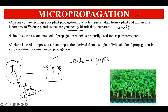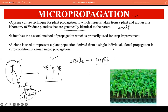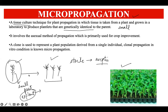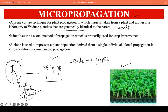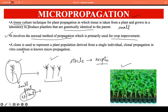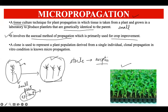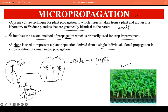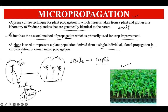In other words, micropropagation is a technique to propagate plants under sterile conditions that is responsible for the production of a large number of genetically identical plants from a single source. This technique is profoundly used in the fields of agriculture, horticulture, and many more. It involves an asexual method of propagation and is primarily used for crop improvement. All the plants propagated from the parent plant are clones — a clone being a plant derived from a single individual with the same genetic identity as the parent. This is performed under in vitro conditions, meaning in glass, that is, in test tubes.